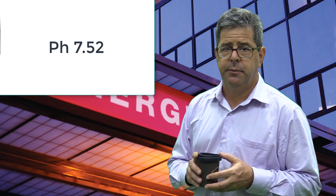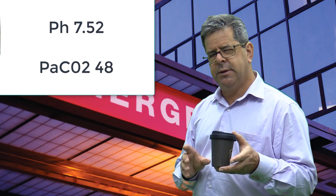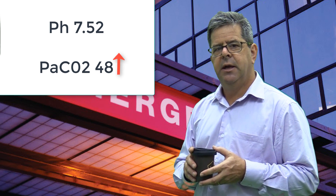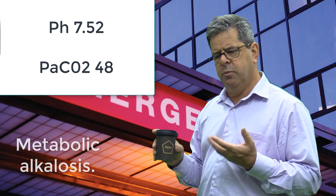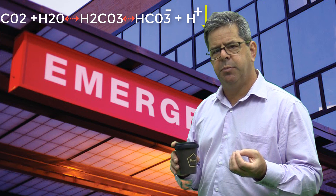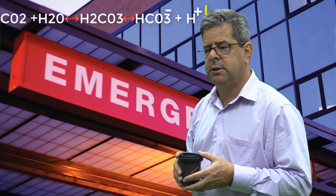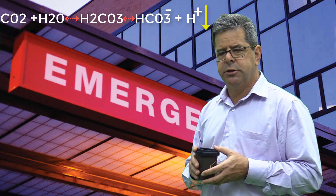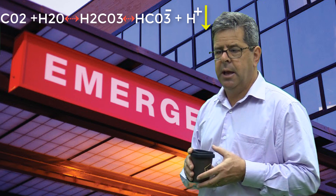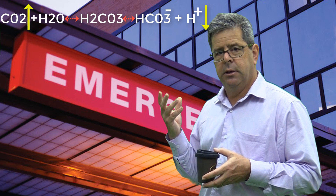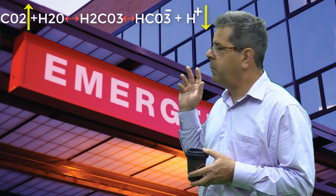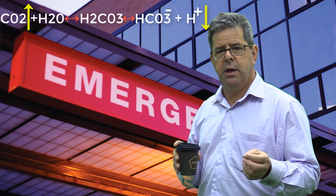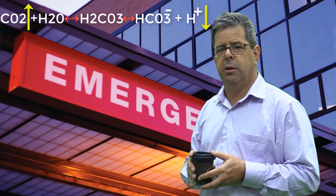The last type: if pH is alkalotic but the CO2 is normal or elevated — that's metabolic alkalosis, which is relatively unusual. You get this when you lose H+ or gain bicarbonate. More commonly you lose H+ — for example in pyloric stenosis. Under those circumstances you become alkalotic, and the respiratory system tries to compensate by hypoventilating, so CO2 rises, as shown by our equation.